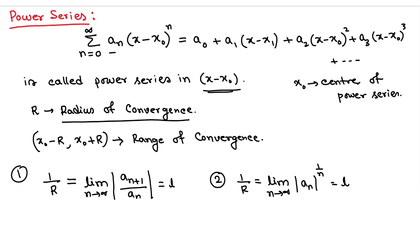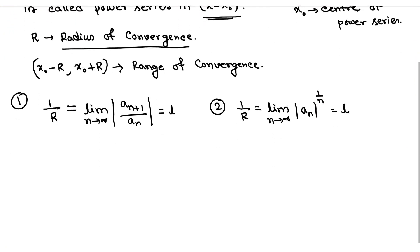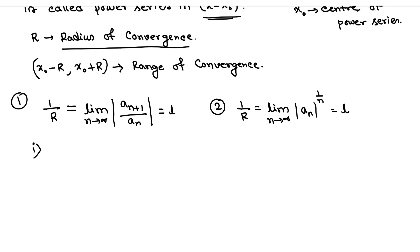Here a_n means the coefficient. To calculate the convergent or divergent property, we just need the coefficient a_n. Now the results: if the limit l equals 0, that means 1/R = 0, so R equals infinity. In that case the range of convergence will be minus infinity to plus infinity.